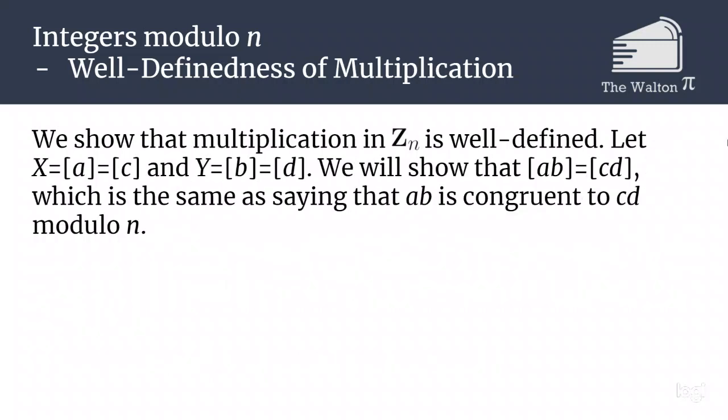Multiplication is also going to be well defined. By saying that a and c are in the same class and b and d are in the same class, we are going to show that ab is in the same class as cd.